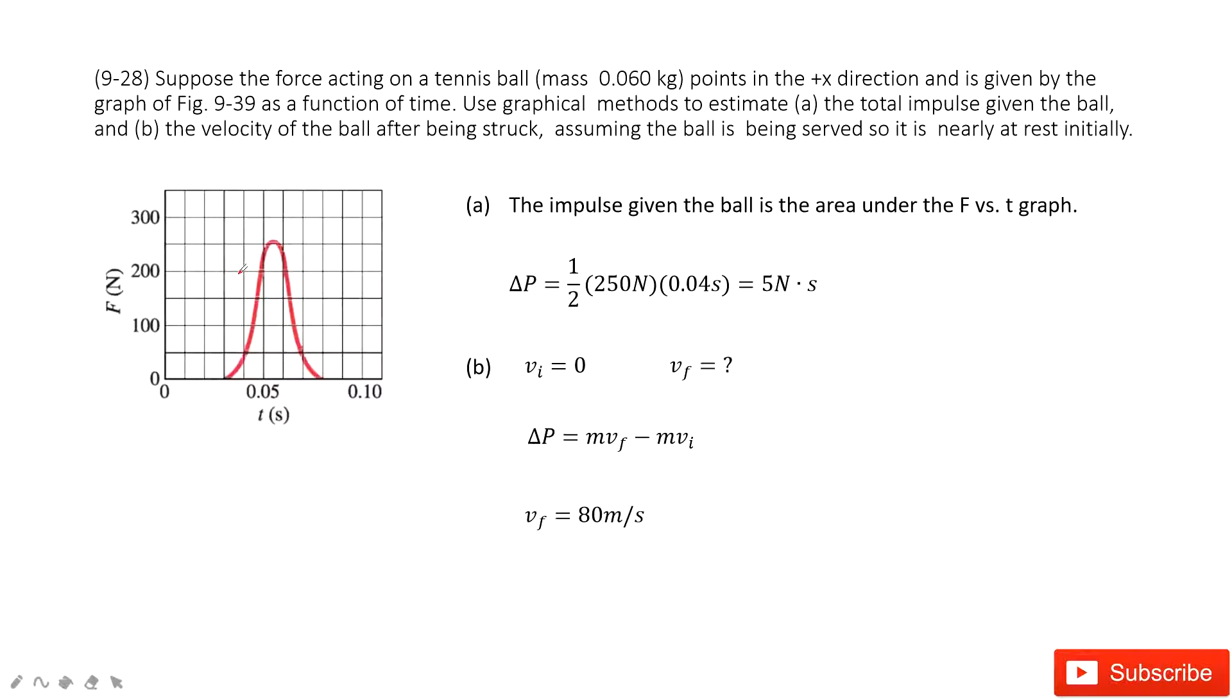So as we know, the total impulse on this picture is just the F-t picture. Impulse is just F times t. As we know previously, the displacement on the v-t graph is the area under the line.